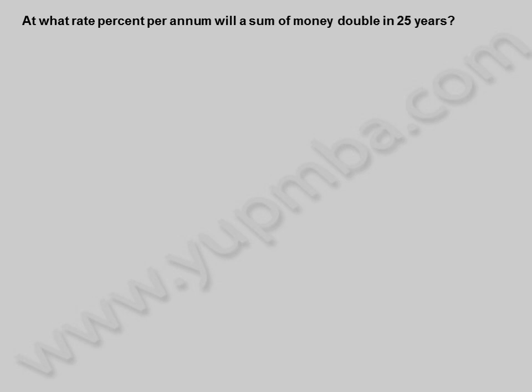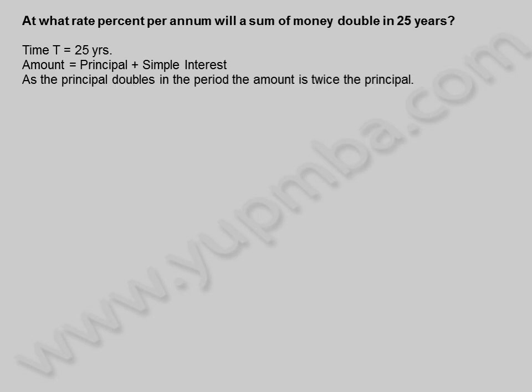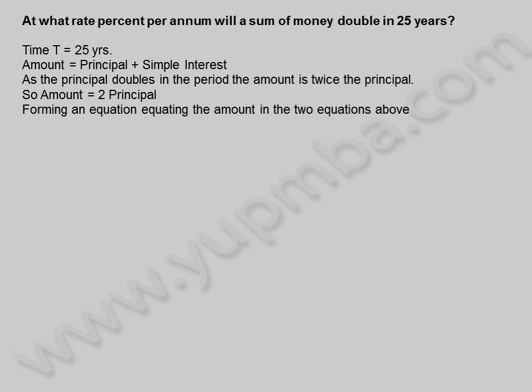Let us see another example. At what rate percent per annum will a sum of money double in 25 years? Time is equal to 25 years. Amount is equal to principle plus simple interest. As the principle doubles in the period, the amount is twice the principle, so amount is equal to 2 times principle.